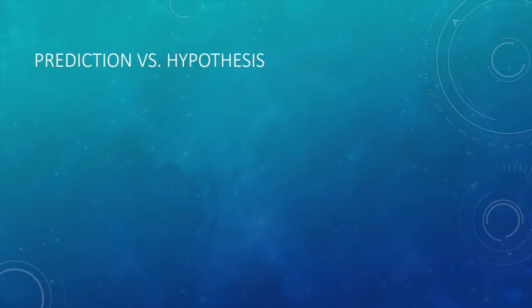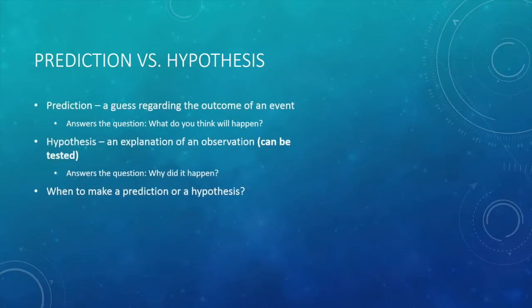Let's think about the statements we just made about the pop cans. You predicted that the pop would either float or sink. Was your prediction a hypothesis? Is there a difference between a prediction and a hypothesis? The answer is yes, there is a difference. A prediction is a guess regarding the outcome of an event — what you think will happen. On the other hand, a hypothesis is an explanation of an observation — why did something happen? A hypothesis must be a statement that can be tested, because we want to know if we've come up with the correct answer to the question, why did it happen?